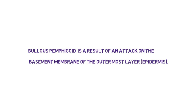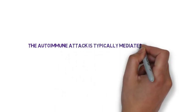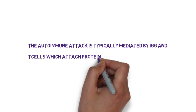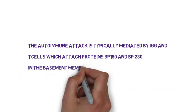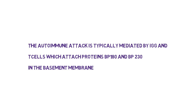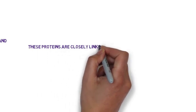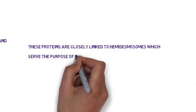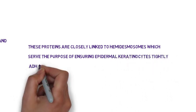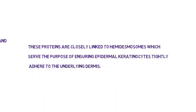So it is the top layer of the skin which Bullous Pemphigoid affects. It is autoimmune and mediated by IgG and T cells, which attack proteins in the basement membrane. These proteins are known as BP-180 and BP-230, and they are closely linked to hemidesmosomes, which ensure epidermal keratinocytes tightly adhere to the underlying dermis. When these proteins are damaged, we get sub-epidermal blisters.